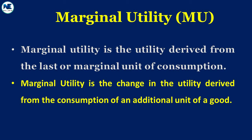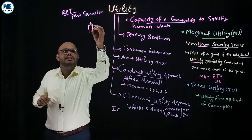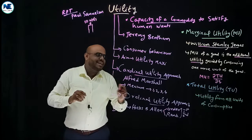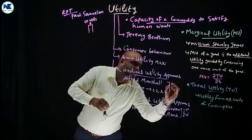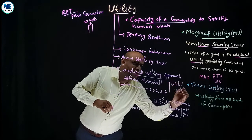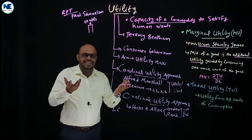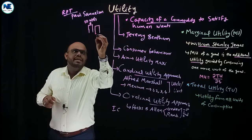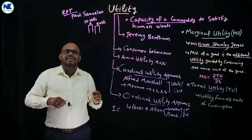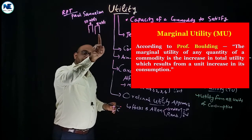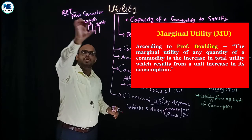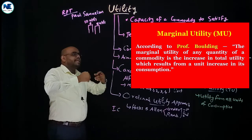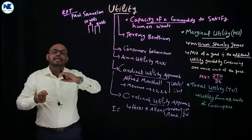For example, with apple juice: from the first glass I consume 10 utils. Alfred Marshall used the term 'utils' as the unit to measure utility — it is an imaginary concept. From the second glass of apple juice, I get 8 utils. So marginal utility of the first glass is 10 utils and of the second glass is 8 utils. Total utility after the first unit is 10, and after the second unit is 18. Marginal utility equals change in total utility divided by change in quantity.